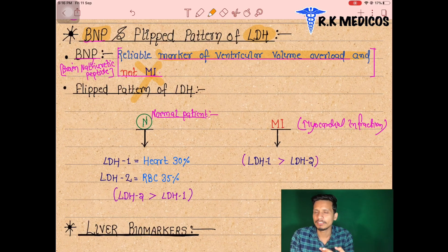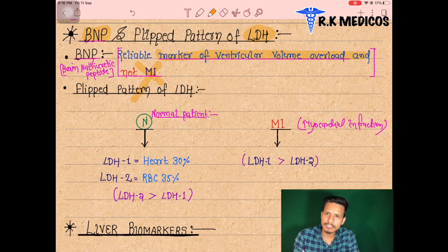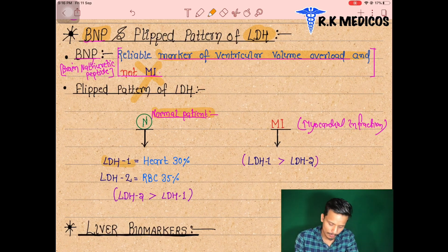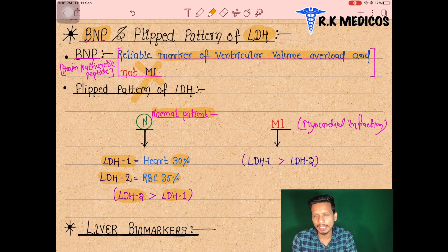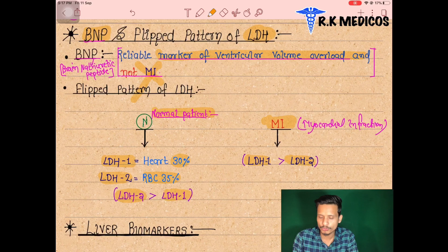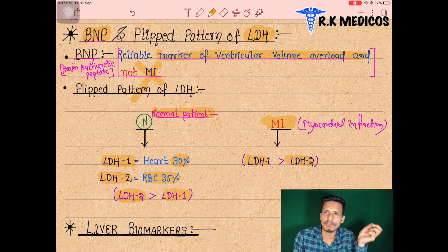To understand ventricular volume overload, we check LDH isoenzymes. In a normal patient, LDH1 from the heart indicates about 30% and LDH2 from RBCs indicates about 35%. If LDH2 is greater than LDH1, the patient is normal. In a patient with myocardial infarction, LDH1 is higher than LDH2 — this is the LDH flip pattern. So in a myocardial infarction patient, LDH1 is higher.